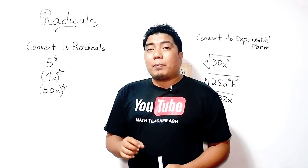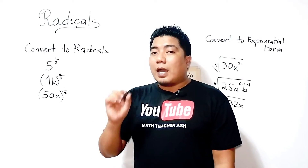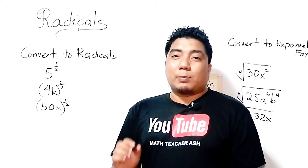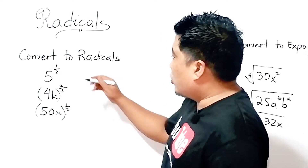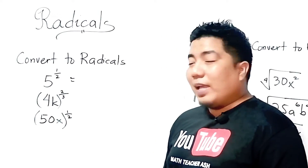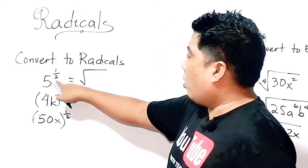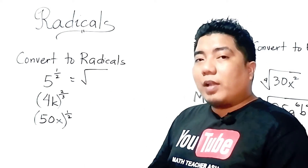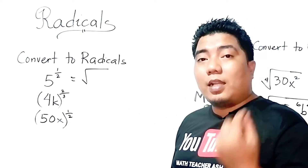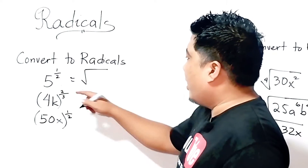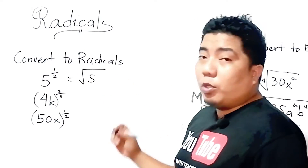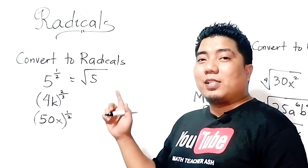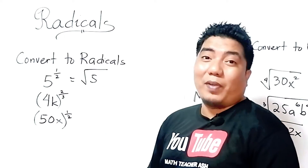Convert to radicals. Remember that from the given rational exponent, the denominator of the rational number will be your root, and the numerator will be the exponent of your radicand. So, if we have 5 to the power of 1 half, that means our nth root will be 2. For the radical sign, you don't need to put 2 here, because a radical sign without a number means the index is 2. And 5 to the power of 1 — we don't need to write the 1, since any expression with no visible exponent has an exponent of 1. That will be our final answer.